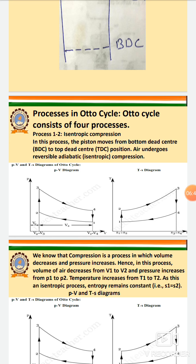In the PV diagram and TS diagram you can see that in process 1 to 2, pressure is increasing and volume is decreasing. As a result, the temperature of the gas also increases. From the TS diagram, temperature increases from step 1 to 2, and entropy remains constant throughout this isentropic compression step.